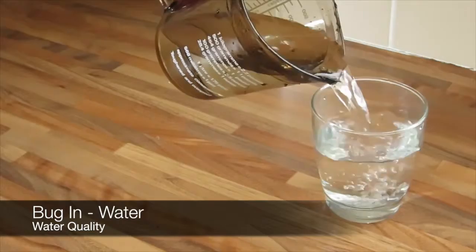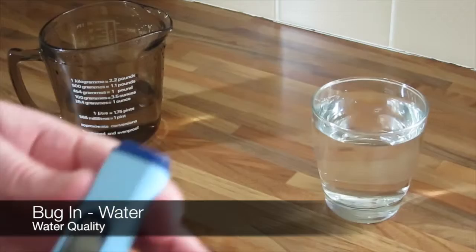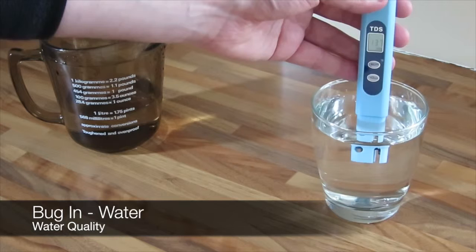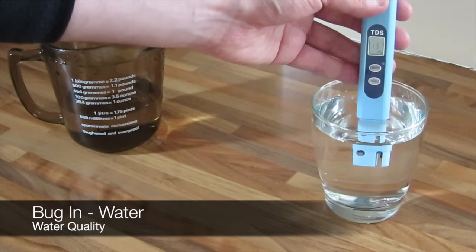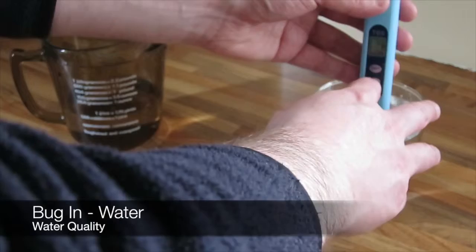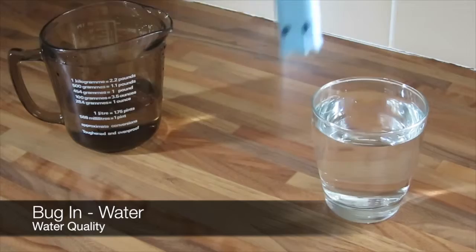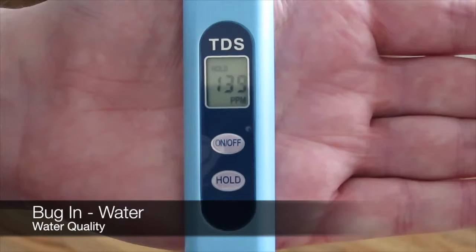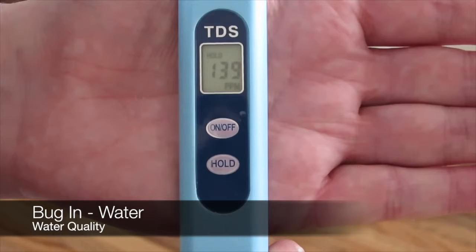So what we do is just pour the water into the glass here, switch on the TDS meter, and then we just put it in for about 10 to 15 seconds. Once the reading is settled, press the hold button, and that allows you to remove it from the water and view the reading. It says 139 parts per million, which is adequate.